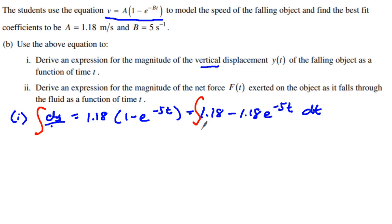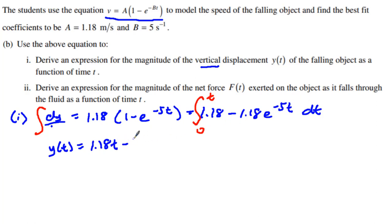So what do we get? The integral of dy is just y as a function of t. The integral of 1.18 with respect to t is 1.18t. The integral of the next term is minus 1.18 divided by negative 5, times e^(−5t). And that is evaluated from 0 to t.